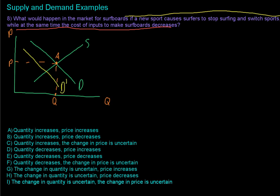And now all that we need to do is figure out this red one. While at the same time the cost of inputs to make surfboards decreases. So it's going to be less costly to make surfboards because the inputs are less costly. Supply is going to increase. That will cause supply to increase from this green line labeled S to the red one labeled S'.